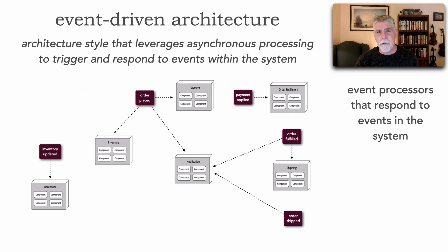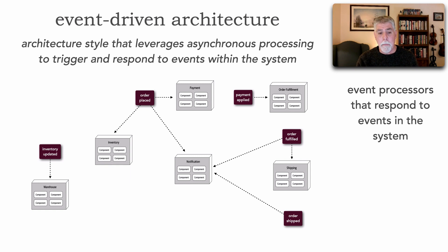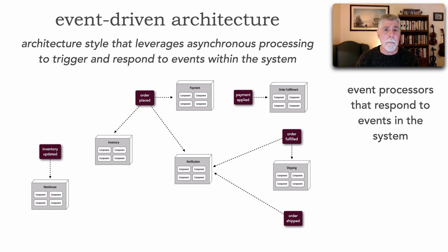There are also services or event processors that respond to events. Notice here we have a one-to-many relationship. For example, order placed: some event processor triggered that event, but then we've got other event processors listening for these events to process them — I need to make a payment, notify the customer, and update inventory. All three of those things need to happen for order placed, and they do happen at the same time, which gives us that high responsiveness.